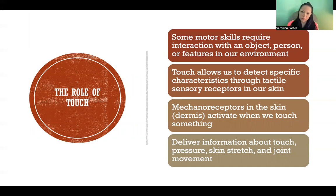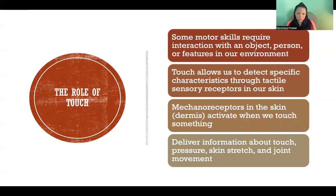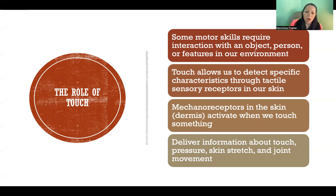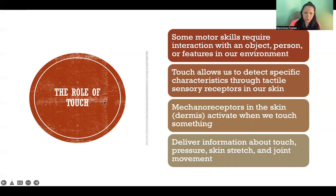Touch allows us to detect specific characteristics through tactile sensory receptors in our skin. For example, when you reach to pick up a glass off the table, that touch feedback is going to be really critical to the accurate execution of that movement, because we need to be able to feel how slippery the glass is, how heavy it is — things we get through our mechanoreceptors. We're feeling pressure, skin stretch, and joint movement involved in the execution of the movement and our interaction with the environment.